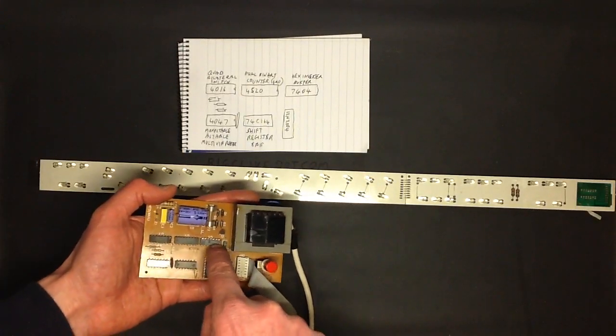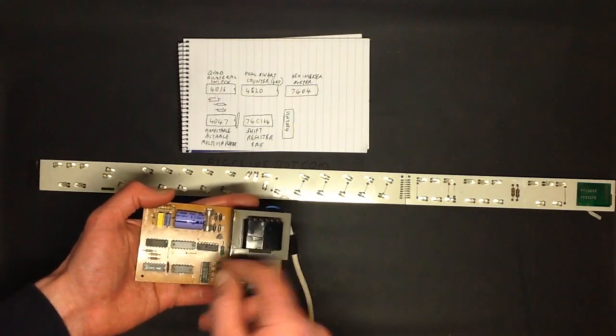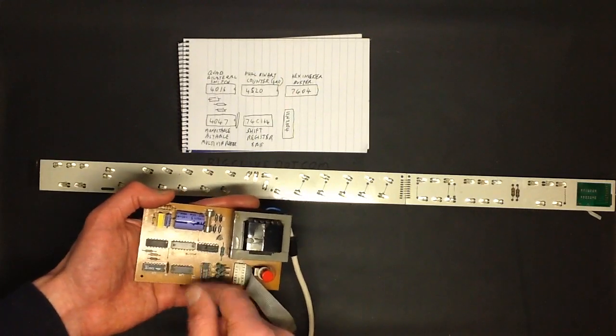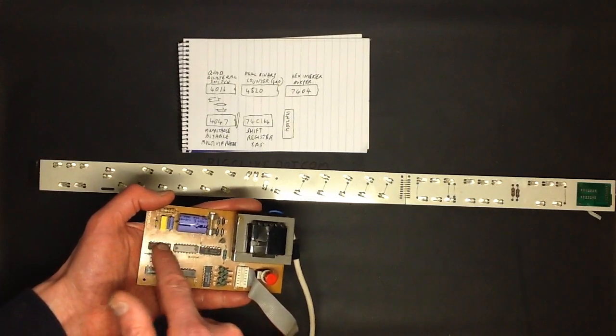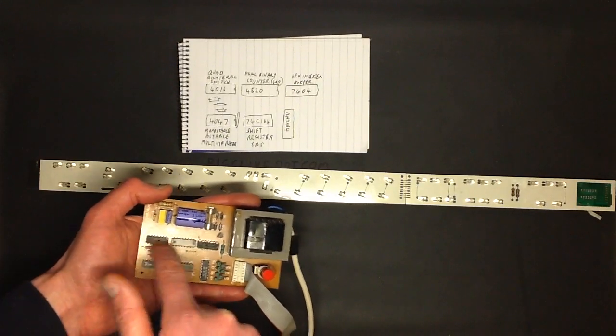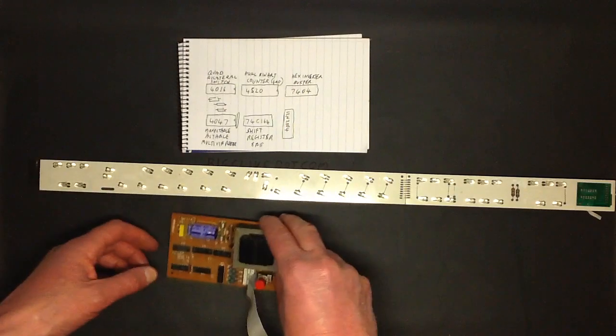And finally, there's the hex inverting buffer, a 7404, which is being used just for general tasks, just to maybe invert some binary outputs. And then they're using the spare gates and the quad bilateral switch just as general logic. So it's quite neat. It's quite interesting. It's certainly, at the time, it was quite radical.